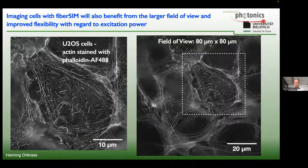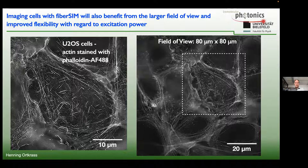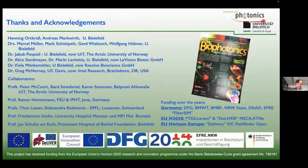A significant advantage of fiber-based delivery is the ability to exchange objective lenses and illuminate much more efficiently. A commercial SIM microscope typically provides 40 by 40 microns field of view, but with fiber-based delivery we can illuminate an 80 by 80 micron area — four times larger — and I'm fairly convinced we could go up to 160 by 160 microns, enabling simultaneous imaging of multiple cells without stitching.